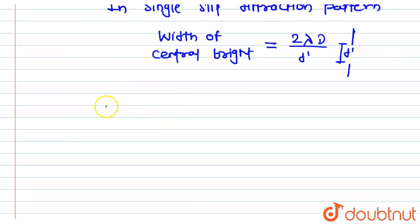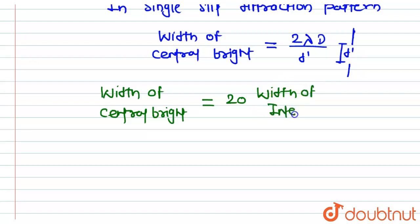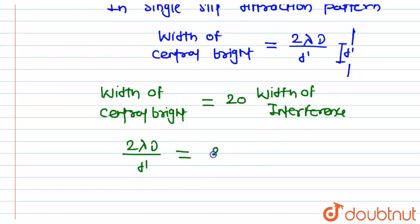According to the question, the width of the central bright band in a single slit diffraction pattern is 20 times the fringe width in the double slit experiment. So here, 2 lambda capital D divided by d dash will be equal to 20 times lambda capital D divided by d.